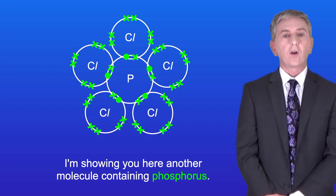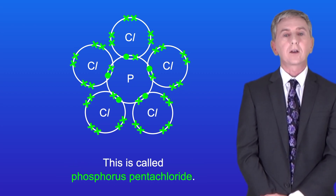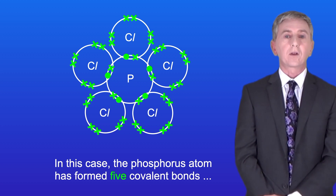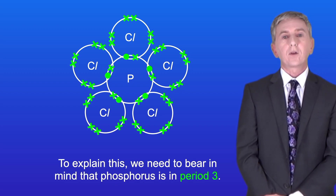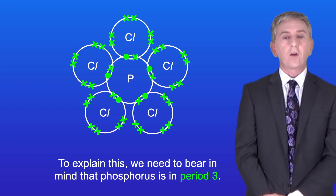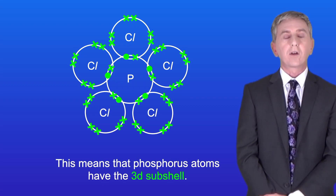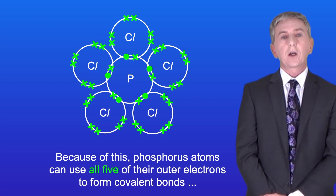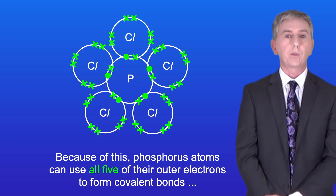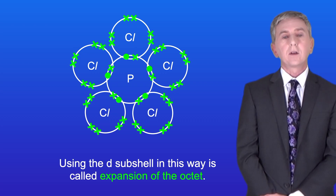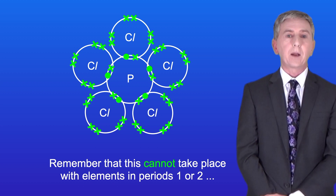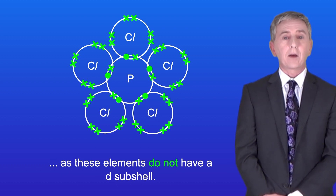Here's another molecule containing phosphorus called phosphorus pentachloride. In this case the phosphorus atom has formed five covalent bonds, so it now has a total of ten electrons in its outer shell. To explain this, we need to bear in mind that phosphorus is in period three and therefore has the 3d subshell. Because of this, phosphorus atoms can use all five outer electrons to form covalent bonds. Using the d subshell in this way is called expansion of the octet, but remember this cannot take place with elements in periods one or two as these elements do not have a d subshell.